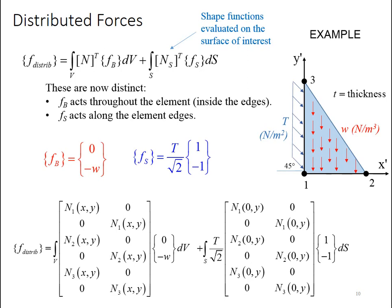Here, remember what I'm doing is I'm evaluating the shape functions on the surface of interest. So, that means I'm evaluating them along the left edge of the element. The edge where x is equal to zero. So, I have to evaluate each of them at zero comma y. And then I've also got my t over square root of 2 times the 1 negative 1 term. Now, note here that when you evaluate shape function 2, because it's a linear function, and because we know it has to be zero at nodes 1 and 3, it has to be zero all along that edge. So, it's going to drop out. It's going to become zero.